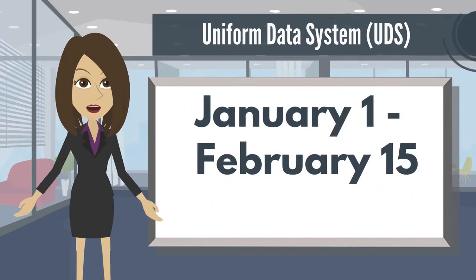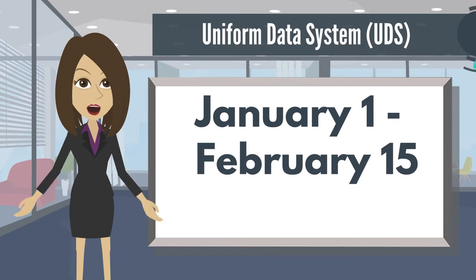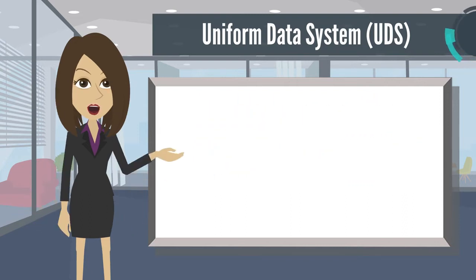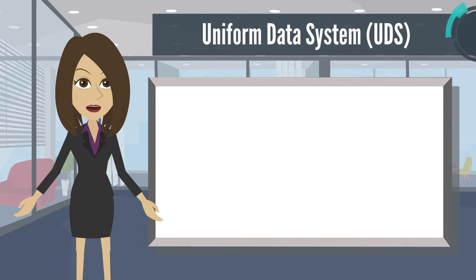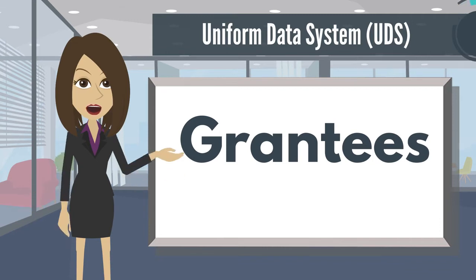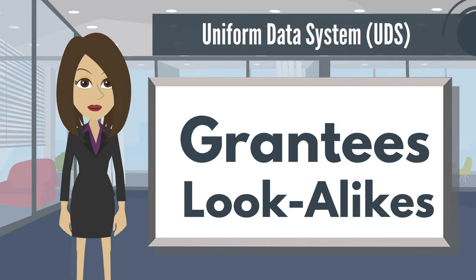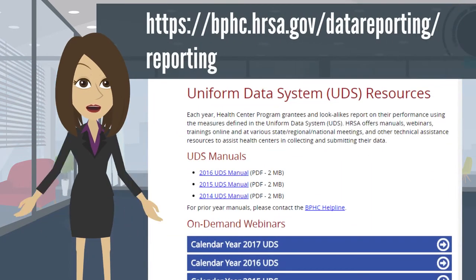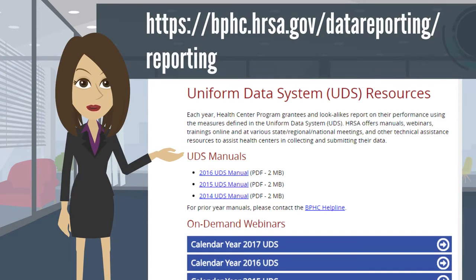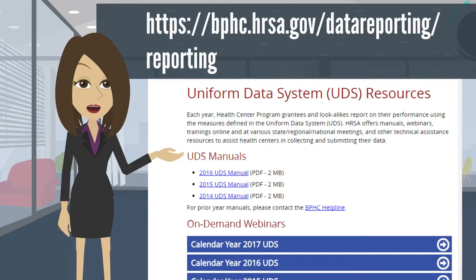Every year between January 1 and February 15, health center program grantees and lookalikes report their data based on the measures defined in the UDS manual. This manual describes the annual UDS reporting requirements for all health center program grantees that receive federal award funds and health center program lookalikes that must meet the health center program requirements for designation. It can be accessed from the Uniform Data System UDS resources page at https://bphc.hrsa.gov/datareporting/reporting.